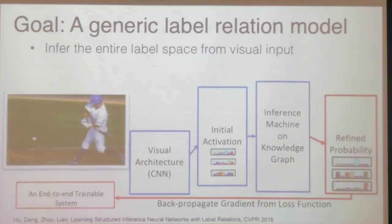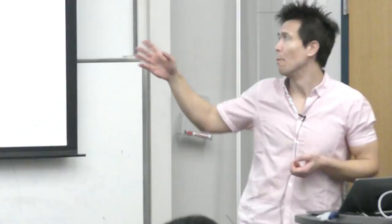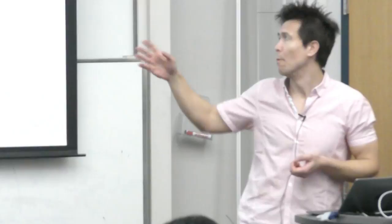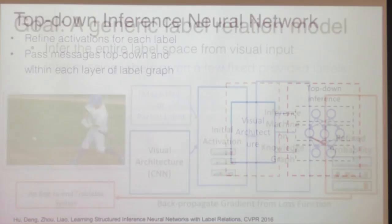Beyond this, I could use it not only with an input image but also with metadata. If I have a GPS tag telling me where the image was taken, or information about the user who uploaded this photo to a social media site, I could use that to get better estimates for my initial activations and run this inference to improve quality of estimates for different labels.